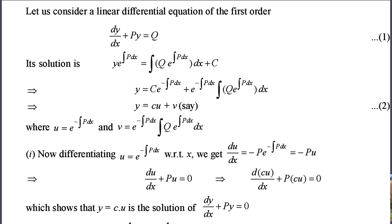Differentiating u, we get du/dx as minus p times e to the power of minus integral p dx, which is equal to minus pu. Hence, du/dx plus pu is equal to 0. Therefore, d(cu)/dx plus p(cu) is equal to 0, which shows the solution of dy/dx plus py equal to 0 is y equal to cu.